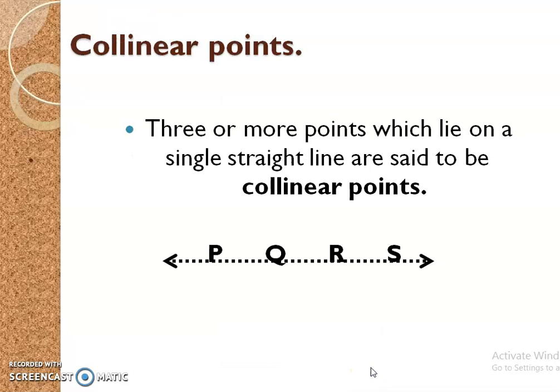Now, collinear points. Three or more points which lie on a single straight line are said to be collinear points. See the figure. Here are point P, point Q, point R and point S are the collinear points.